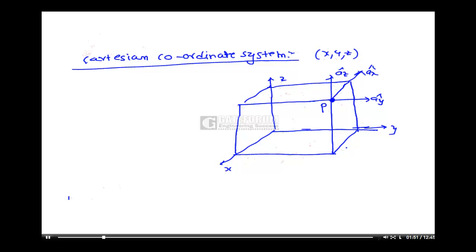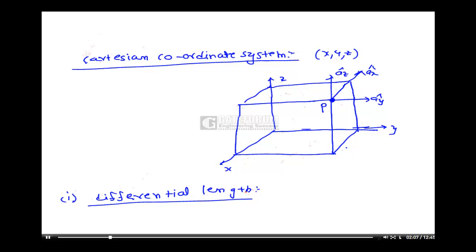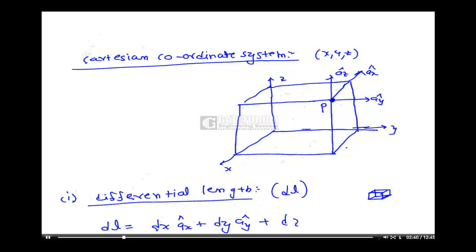Now I can define three important terms regarding this. The first is differential length, indicated by DL. If I consider a small box, the differential length of any vector is given by DL = DX·AX + DY·AY + DZ·AZ.